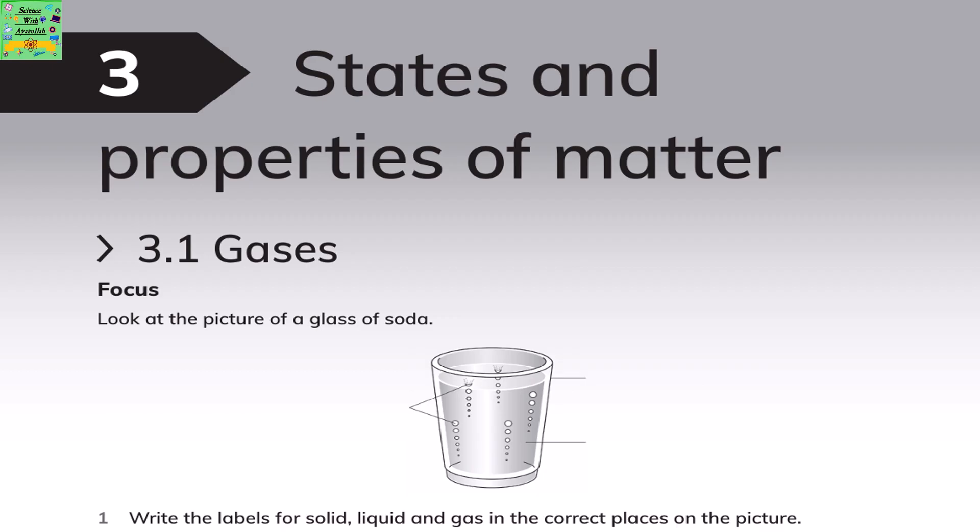States and Properties of Matter, section 3.1: Gases. Look at the picture of a glass of soda. Write the labels for solid, liquid and gas in the correct places on the picture. Solid would be the glass, liquid is the water or the soda, and gas are the bubbles.